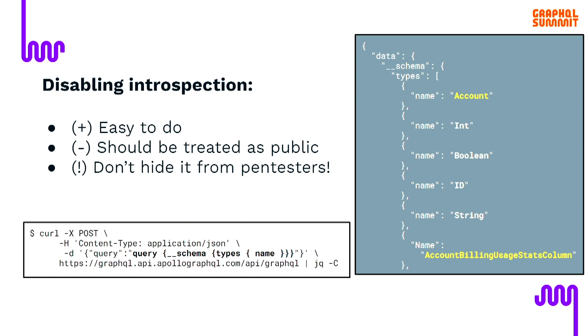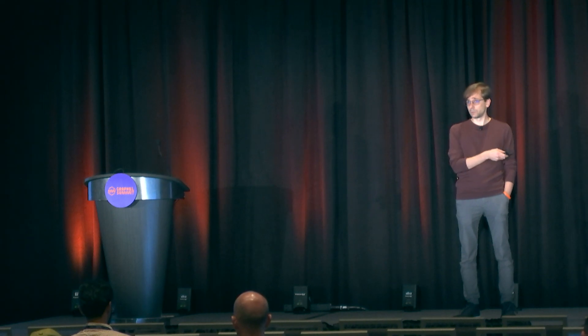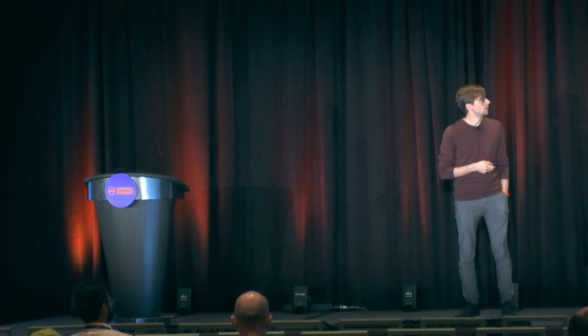The second thing is introspection. GraphQL enables introspection, which is amazing because it allows a lot of automated tooling like GraphQL clients and so on — nice for developers, also nice for attackers to understand what schema is available. Disabling it is usually easy, and sometimes it just happens by default when you run in production.